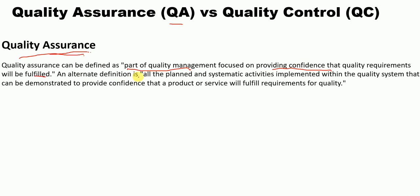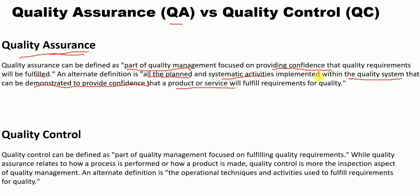An alternate definition of QA is: all planned and systematic activities implemented within the quality system that can be demonstrated to provide the confidence that a product or service will fulfill requirements for quality.